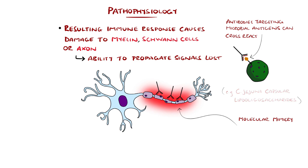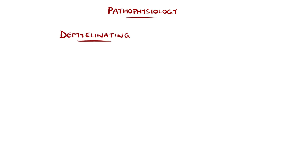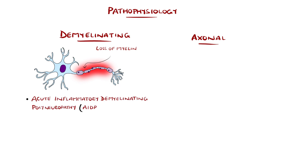There are multiple subtypes of Guillain-Barré syndrome based on those which cause demyelination, those which affect the axons, and the symptoms produced as a result. An example of demyelinating is acute inflammatory demyelinating polyneuropathy, AIDP, which is the most common subtype, making up 80–90% of cases.